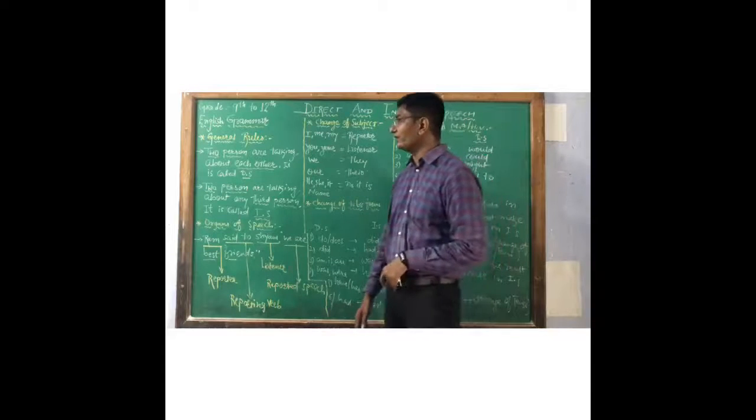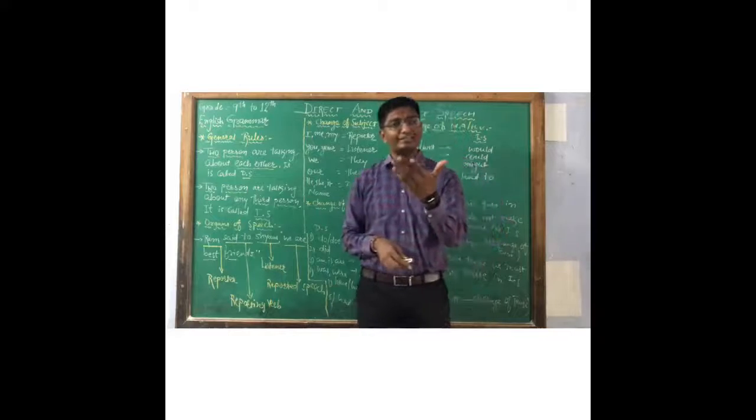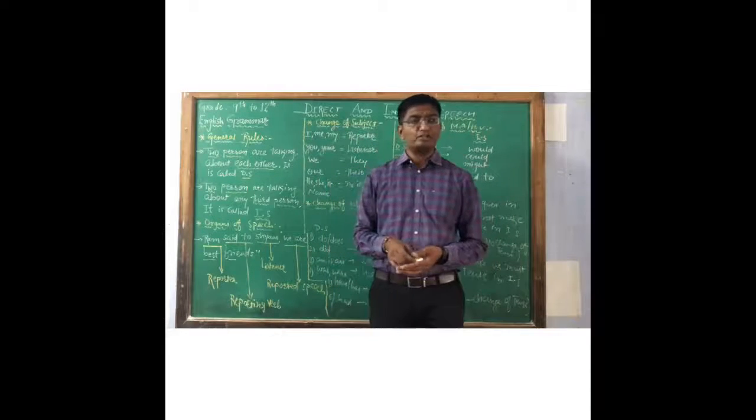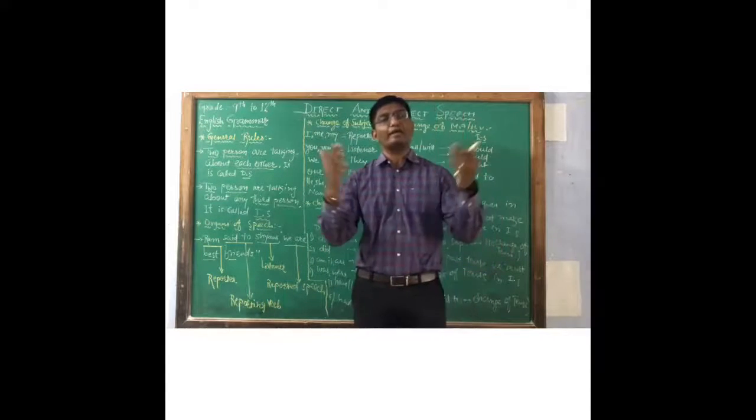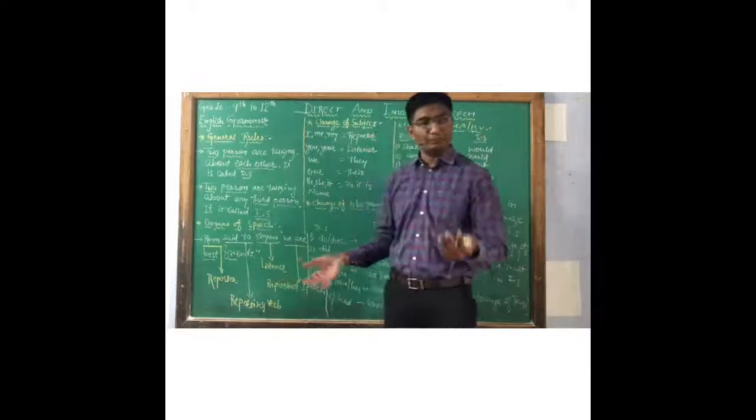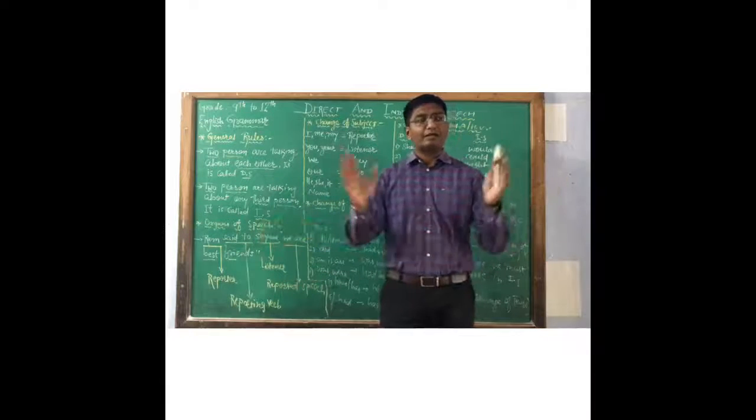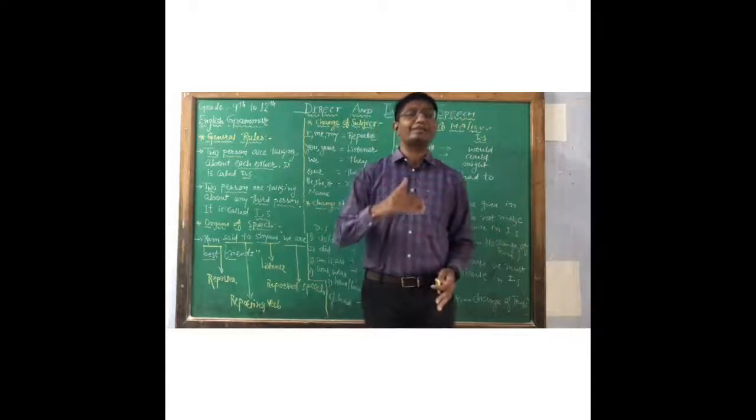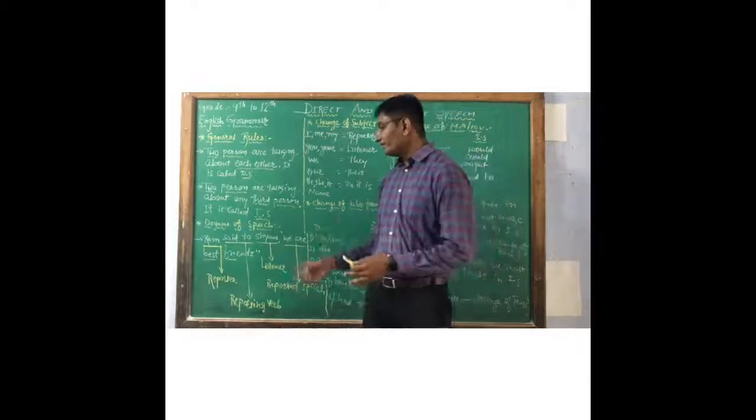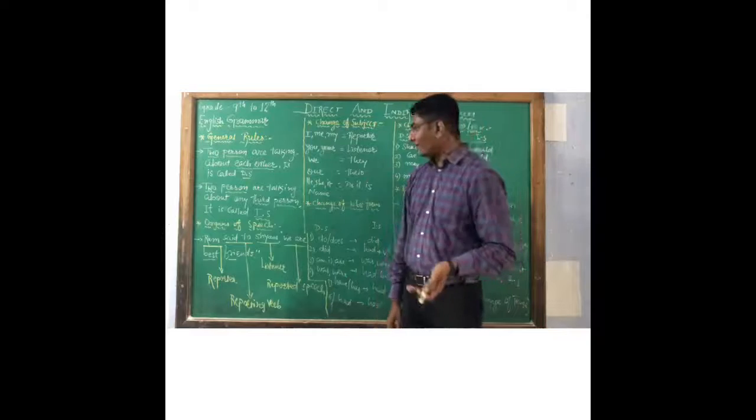General rules. When two persons are talking about each other, it is called direct speech. When two persons are talking about any third person, it is called indirect speech. Then we have seen organs of speech. So we have seen reporter, then listener. The connection between this reporter and listener is called reporting verb. Sentence given in inverted comma is called reported speech.